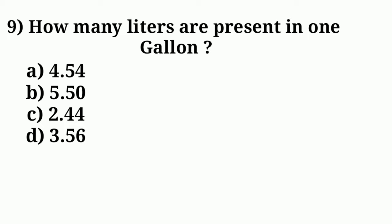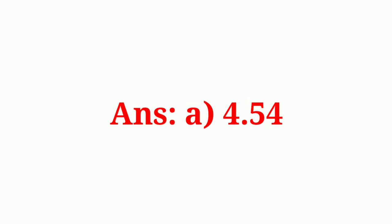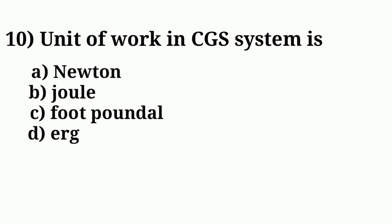Question number nine: How many liters are present in one gallon? Answer: option A, 4.54. Question number ten: Unit of work in CGS system is?